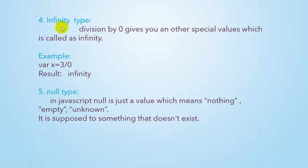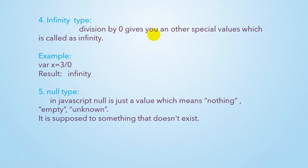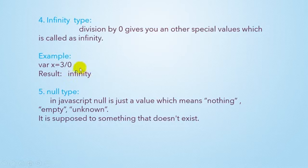Boolean data type is used to store only one possible value - that value can be true or false, or sometimes it is called on and off, or sometimes yes or no. Only one possible value can be stored. Now move to next - that is Infinity. If you divide any number by zero in JavaScript, the result will always be Infinity. This concept is specific to JavaScript only, because every language treats these things in their own manner. If you declare a variable where X equals 3 and divide by zero, the result will be Infinity.